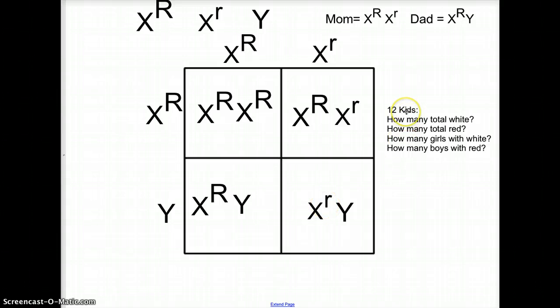So let's do these questions. Let's say this couple had 12 kids. How many of those 12 kids total would have white eyes? So you'd say, okay, one out of four. So three out of 12 would have white eyes. How many total would have red? You'd say, well, three quarters would have red eyes. So that would be nine out of 12 total kids would have red eyes, probably.